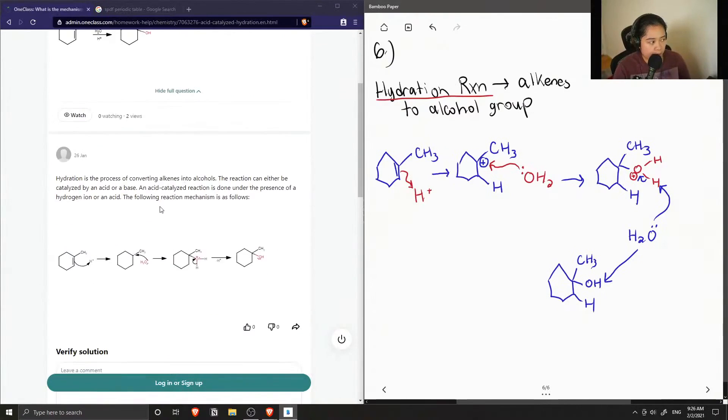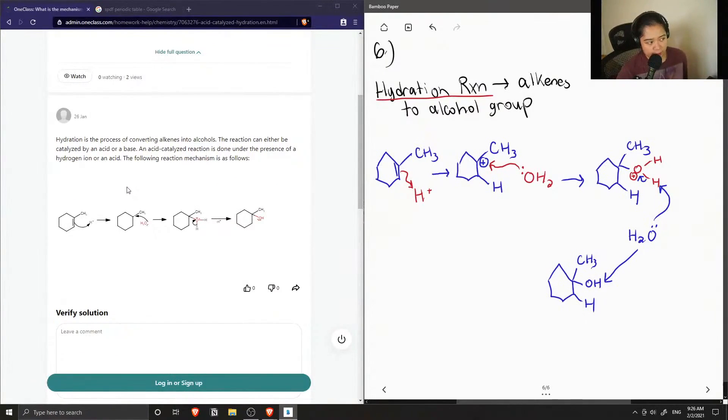The tutor said that hydration is the process of converting alkenes into alcohols. The reaction can either be catalyzed by an acid or a base. An acid-catalyzed reaction is done under the presence of a hydrogen ion or an acid. The following reaction mechanism is as follows. They showed the alkene getting protonated and then a water molecule coming in to neutralize the carbocation that was formed.